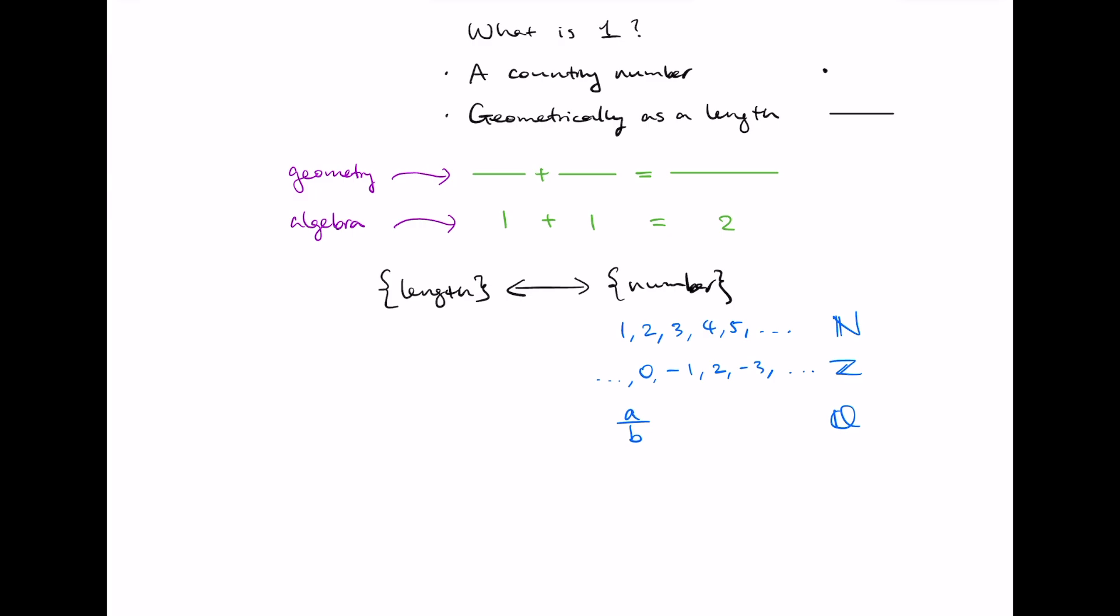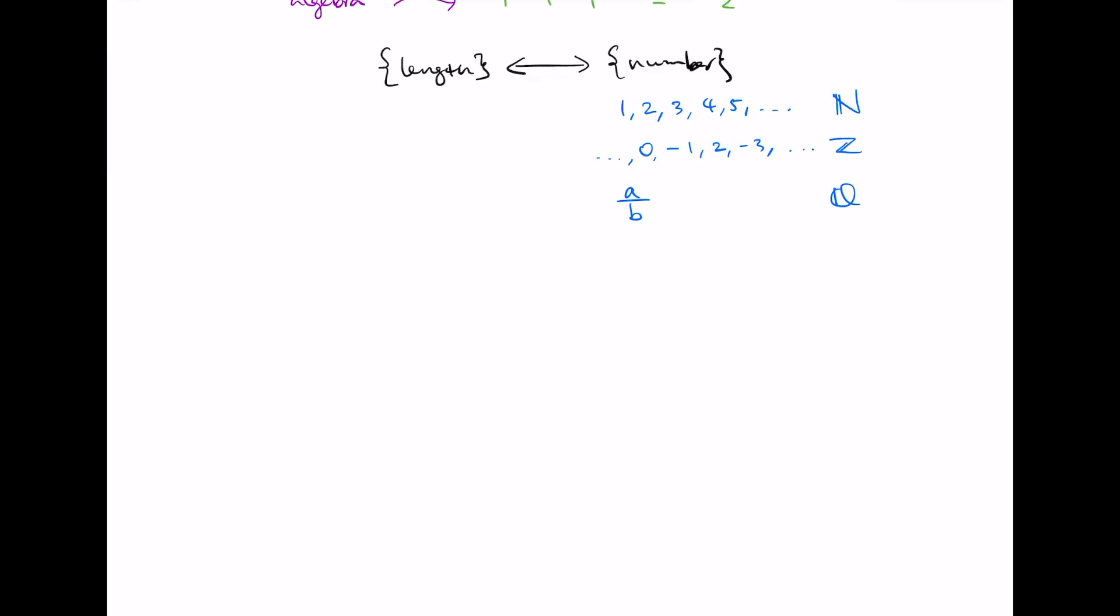Now, the amazing thing that was discovered by the Greeks is that this isn't everything. They discovered that there are naturally occurring lengths, which cannot be described by adding together or subtracting or multiplying or dividing natural numbers. Here's a classic example.